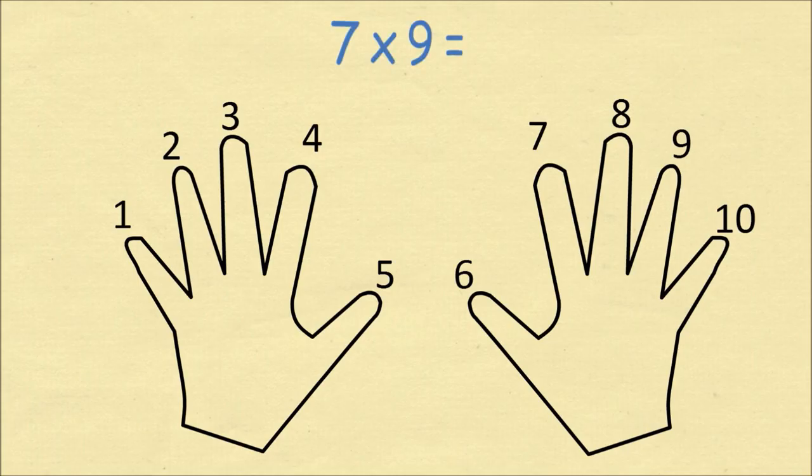Let's do an example of seven times nine. Count over to the seventh finger, which is the index finger on your right hand, and bend that finger.